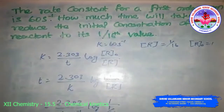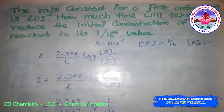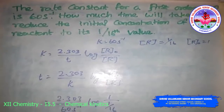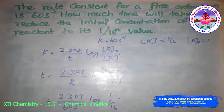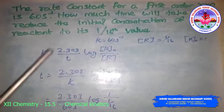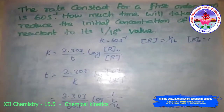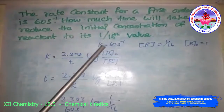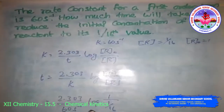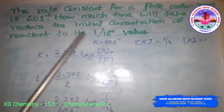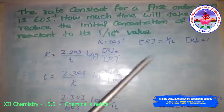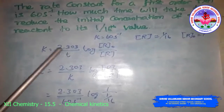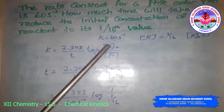The rate constant for a first order reaction is 60 s⁻¹. How much time will it take to reduce the initial concentration of the reactant to 1/16th of its value? Here, k = 60 s⁻¹ and R = 1/16, with R₀ = 1. The formula for the first order reaction is k = 2.303/t × log(R₀/R), so we rearrange to find t.